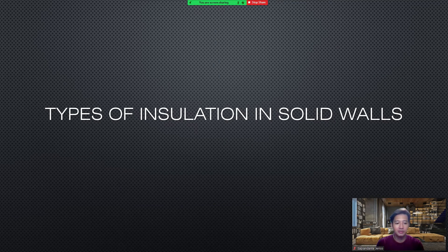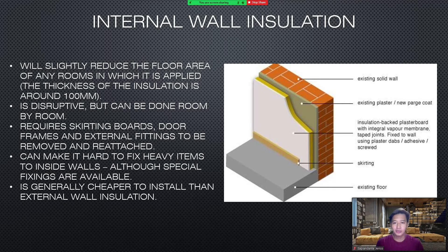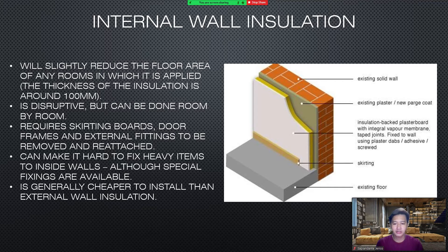Types of insulation in solid walls. Internal wall insulation slightly reduces the floor area of any rooms in which it is applied. The thickness of the insulation is around 100mm. It is disruptive but can be done room by room. It requires skirting boards, door frames, and external fittings to be removed and reattached. It can make it hard to fix heavy items to inside walls, although special fixings are available. It is generally cheaper to install than external wall insulation.